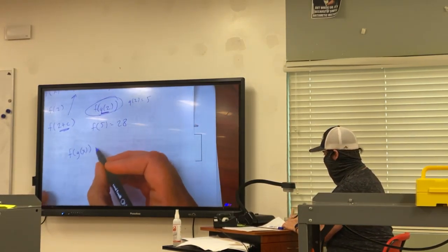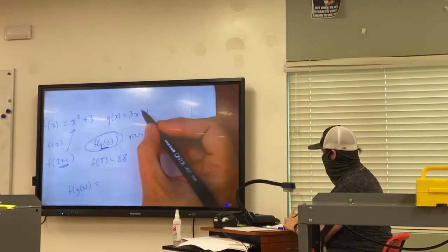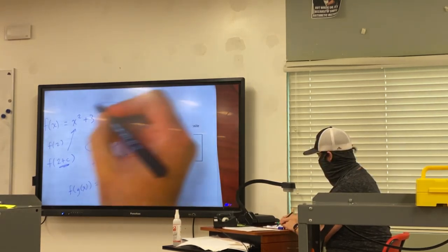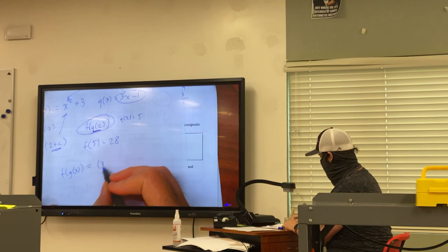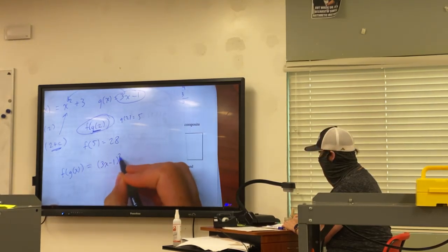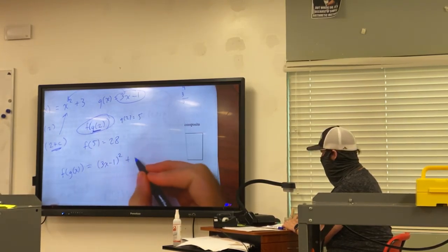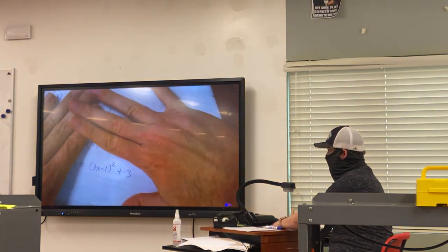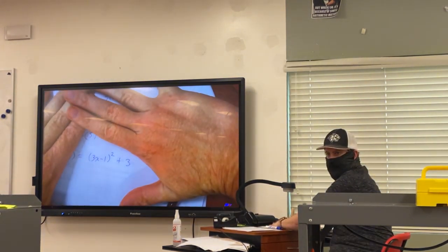And sometimes it's really complicated. Like sometimes it might literally look like, in this case, f of g of x would be taking g of x, 3x minus 1, and plugging it in. So that's 3x minus 1 squared plus 3. And that's all we're going to see.